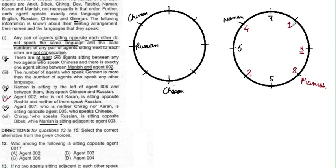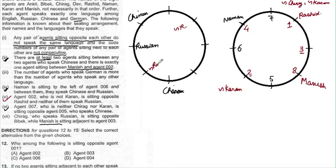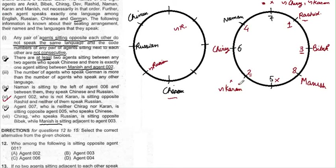Now for names and languages: agent 007 is neither Chirak nor Karan. Agent 002 is not Karan. From condition 7, Chirak speaks Russian and sits opposite Bibi. Chirak cannot be at the position opposite Rashid (taken), nor at the Chinese-speaking position (005 speaks Chinese, Chirak speaks Russian). The only valid position for Chirak is code 006, which speaks Russian. Bibi is then placed opposite Chirak, and Karan goes to position 005.